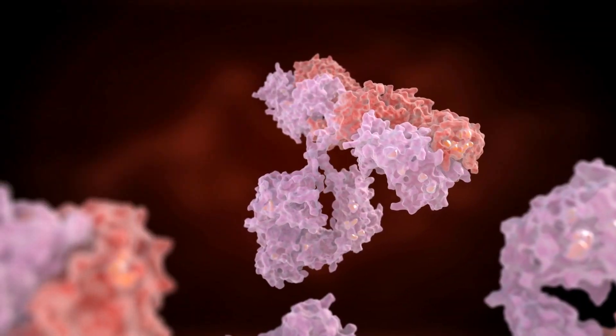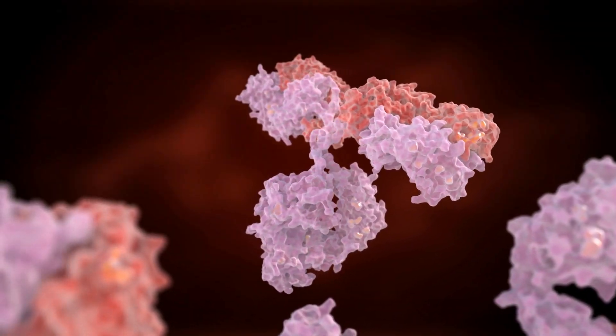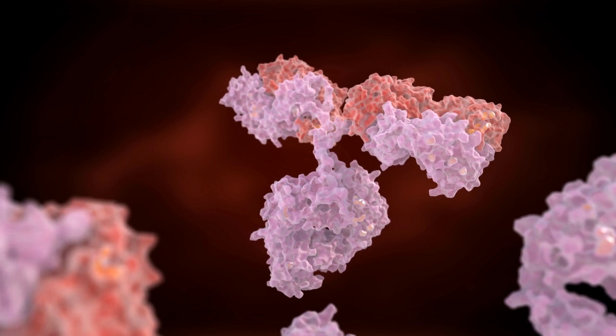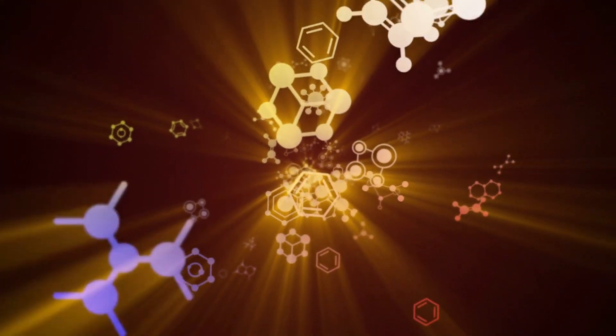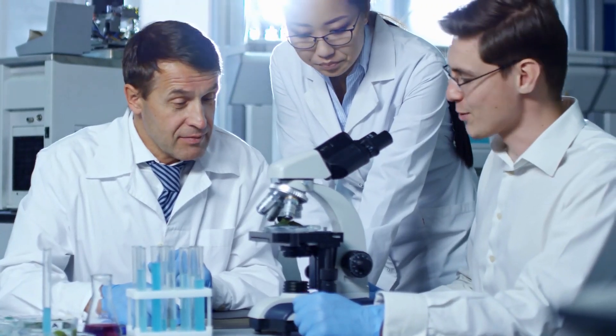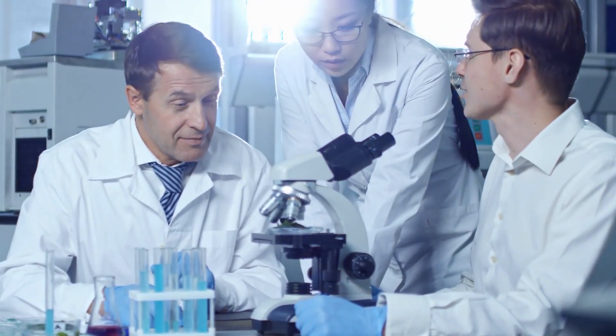One mutation allows the virus to evade a neutralizing antibody produced by the human body. This allows a virus variant to avoid the immune system. But there is no solid proof yet if it makes the transmission between people easier.